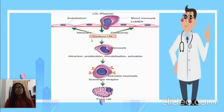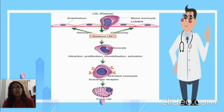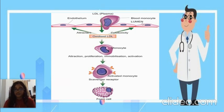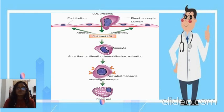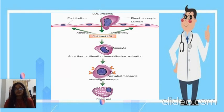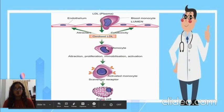Now we'll see the role of monocytes. LDLs from the plasma, once they enter into the intima, form oxidized LDL. This oxidized LDL has two functions: first, it is cytotoxic to the endothelium, and second, it attracts monocytes. These monocytes get converted to macrophages having scavenger receptors, and these oxidized LDLs are taken up by these macrophages forming the very important foam cells.